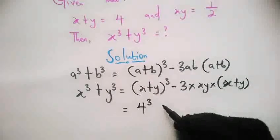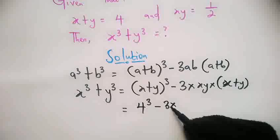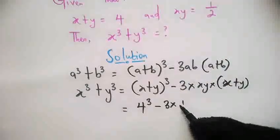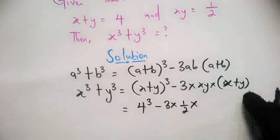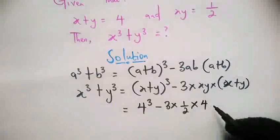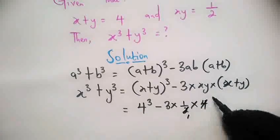So 4³ minus 3 times xy, which is 1/2, times x + y, which is 4. So the 2 from the denominator cancels with this 2.